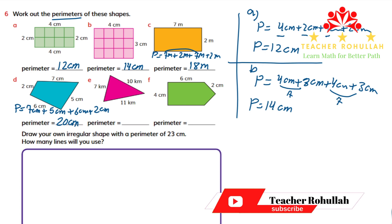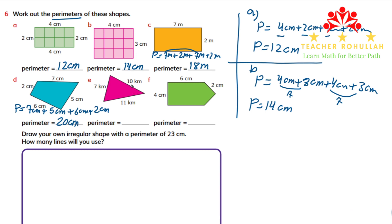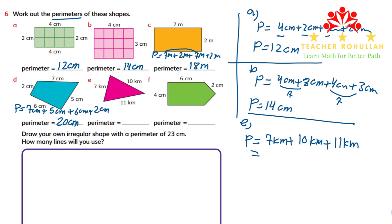Let's now work on the perimeter of shape E. Shape E is a triangle with sides of ten kilometers, eleven kilometers, and seven kilometers. The unit here is kilometers, not meters or centimeters. You know the difference: one kilometer is 1000 meters, and one meter is 100 centimeters. So P equals seven kilometers plus ten kilometers plus eleven kilometers. Seven plus ten is seventeen, and seventeen plus eleven is 28 kilometers. The perimeter for shape E is 28 kilometers.